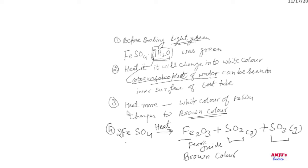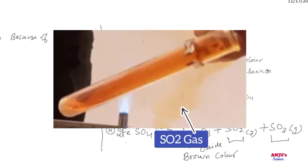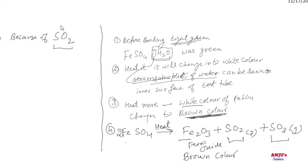So by heating more, the white color of ferrous sulfate changes into brown color and a smell like matchstick can be detected. That is because of sulfur dioxide. Sulfur dioxide smells like matchstick and sulfur, while sulfur trioxide is odorless. So we can observe brown ferric oxide and the smelly gas sulfur dioxide being produced.